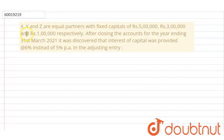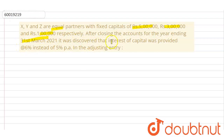Hello everyone, let's begin with the question. The question is: X, Y, Z are equal partners with a fixed capital of rupees 5 lakh, 3 lakh, and 1 lakh respectively. After closing the account for the year ending 31st March 2021, it was discovered that the interest on capital was provided at 6% per annum instead of 5% per annum.